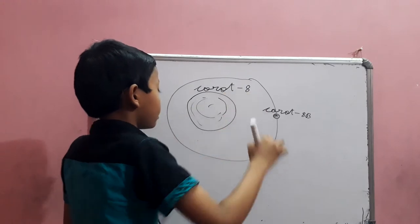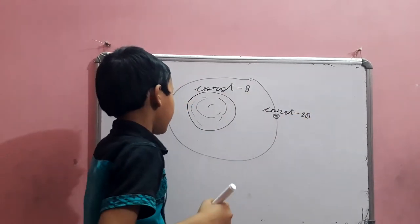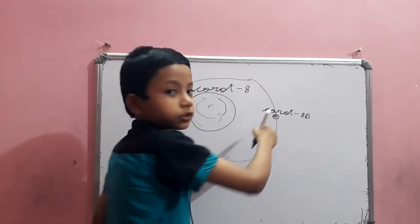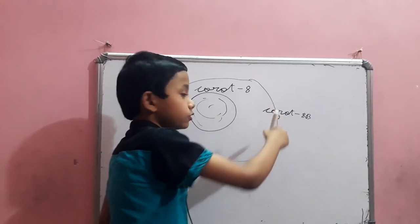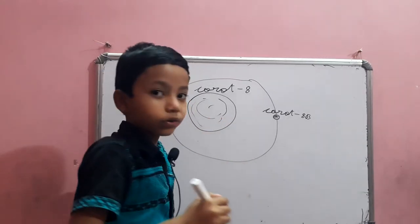But it looks a little similar because there is a B on the planet. And it is reddish, and Corot-8 B is reddish color. And in Corot-8, there is a yellow dwarf.